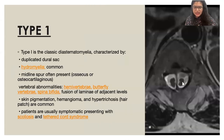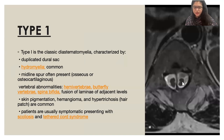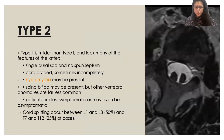Type 1 is the classical diastematomyelia, characterized by a duplicated dural sac, hydromyelia, and a midline spur which could be osseous, fibrous, or osteocartilaginous. Vertebral abnormalities like spina bifida, hemivertebrae, and butterfly vertebrae are very common, as is skin pigmentation such as hypertrichosis — a hair patch. Patients are usually symptomatic with scoliosis and tethered cord syndrome. Type 2 is milder, with a single dural sac, no spur, and hydromyelia and spina bifida may be present, with patients being less symptomatic.